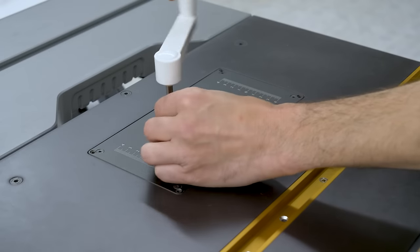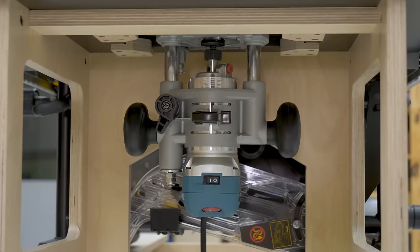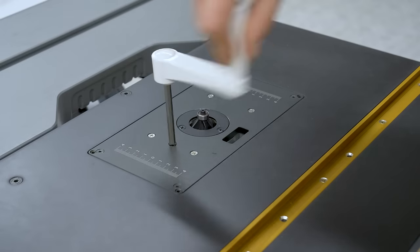It's not usual to install a miter channel for such a small router table, but I wanted to make the most out of this tool. This is optional and you can adapt the position of the insert plate to your needs.